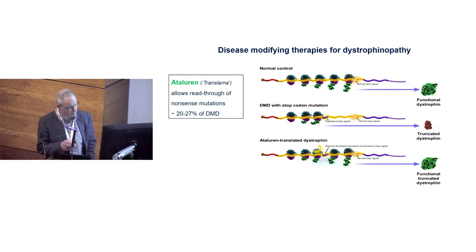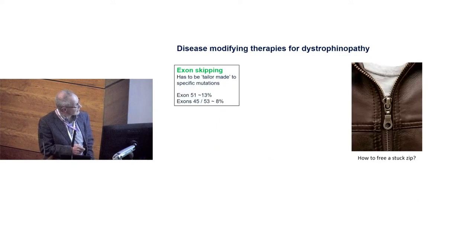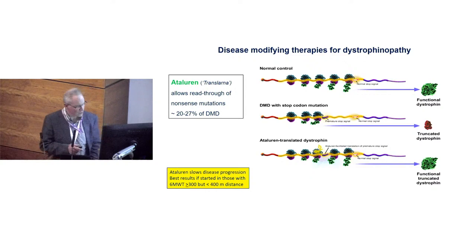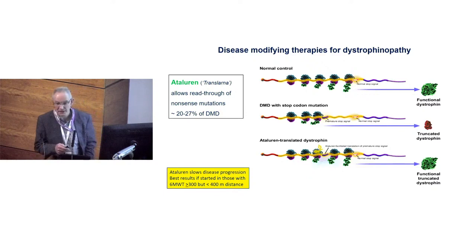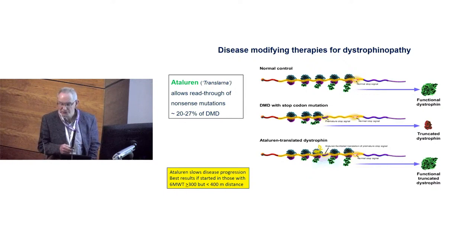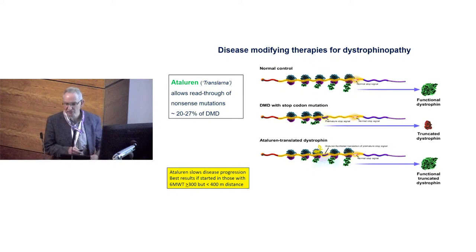In a nonsense mutation, the reading frame is blocked by a stop codon that shouldn't be there, so the protein manufacture stops and you get a defective protein. What atalurin does is it allows reading through of the stop codon so that you end up with a functional protein at the end. We know that atalurin, if deployed early around the time ambulation begins to deteriorate, will actually improve the natural history of the condition. It's applicable to roughly 25% of patients with dystrophin deficiency.